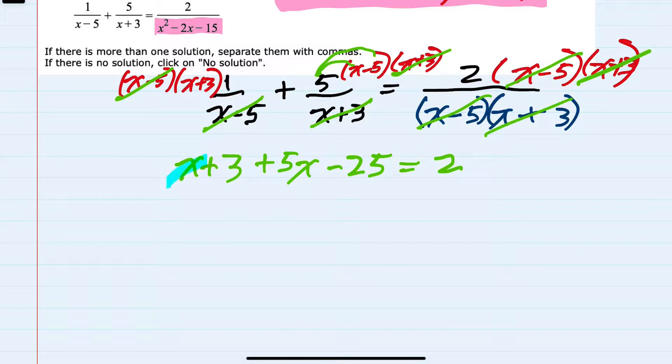So I'm going to combine like terms on the left-hand side. I have a 1x and a 5x. Those will combine to be a 6x. And then I have a 3 and a minus 25. Those will combine to be a minus 22 equals that 2 on the right-hand side.